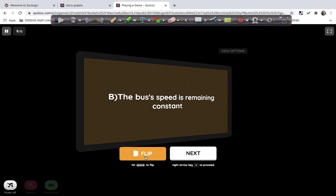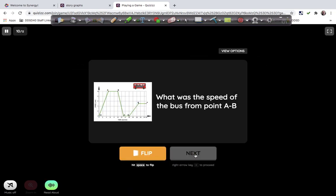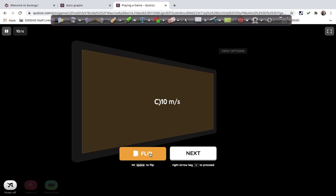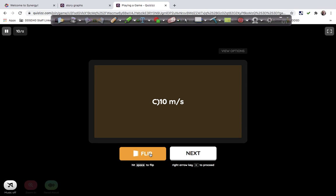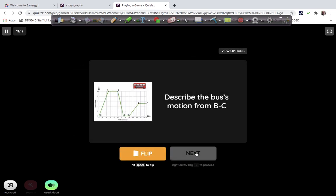And it says the bus's speed is remaining constant. Yeah, we agree with that. What is the speed of the bus from point A to point B? And I can see that. I don't need to click on it. I can see that it is 10 miles per hour. So let's flip that and see that is 10 meters per second. It was nine miles per hour. Meters per second. All right. Let's go to the next question.